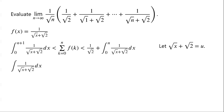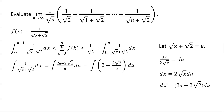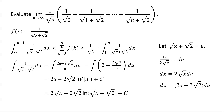We let root x plus root 2 equal u. Then dx over 2 root x equals du, so dx equals 2 root x du. We know that root x equals u minus root 2, so dx equals 2u minus 2 root 2, du. The indefinite integral can now be written as the integral of 2u minus 2 root 2 over u, du, which equals the integral of 2 minus 2 root 2 over u, du. This equals 2u minus 2 root 2 ln of modulus of u, plus c. As u equals root x plus root 2, we can write: 2 root x minus 2 root 2 ln of root x plus root 2, plus c.